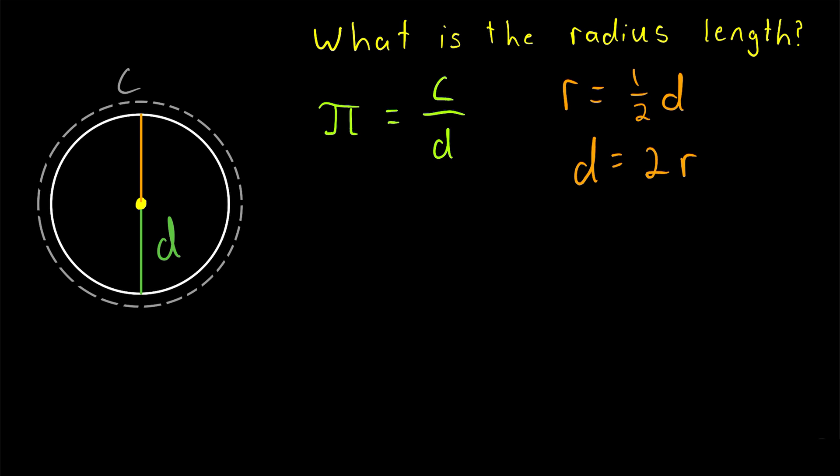So look at this. If we substitute 2R in for D in this equation, and then just solve for R, we will have the radius of the circle in terms of circumference. So let's do that. Let's substitute 2R in for D, the diameter.